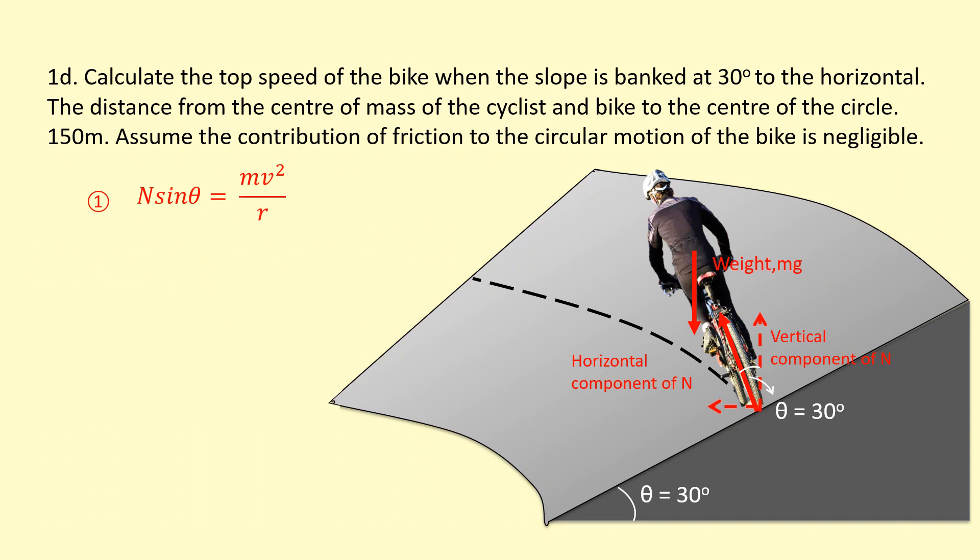The vertical part here, the weight is going to be balanced by the vertical component of the normal reaction force. So N cosine theta is equal to mg. Just like before, we're going to divide both sides. The N's cancel out, the m's cancel out, and we get an equation for tan.